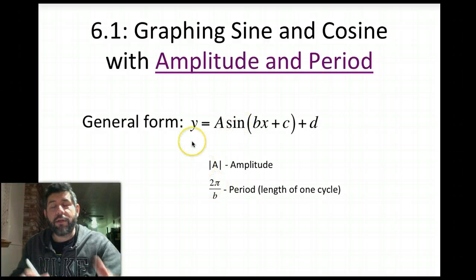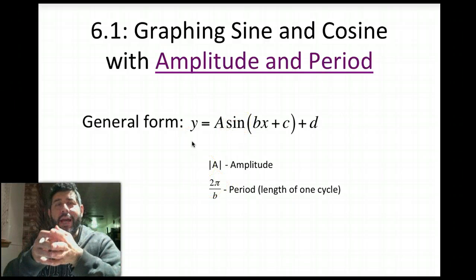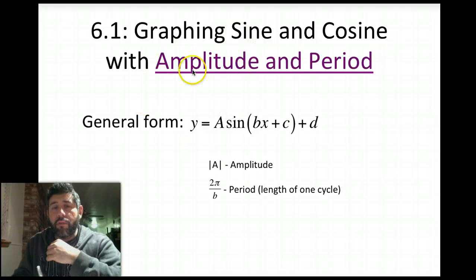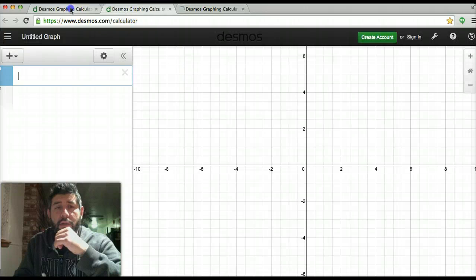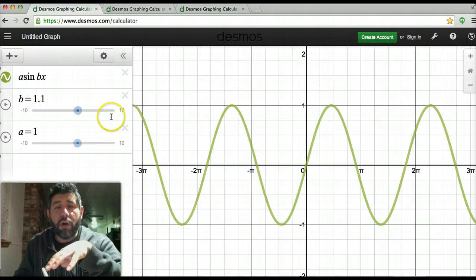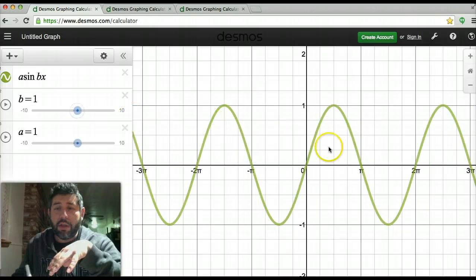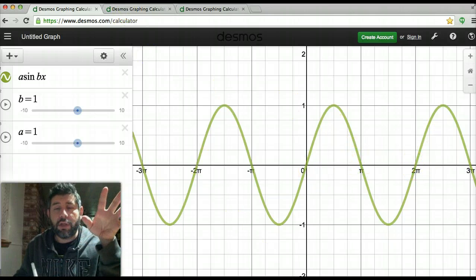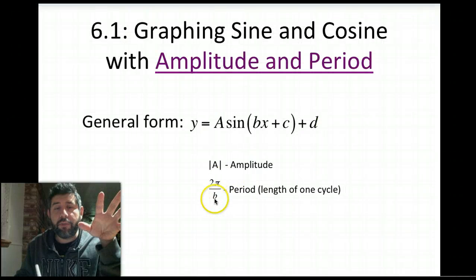And that comes from the fact that, if you remember, when I had b set to 1, we saw that when b was set to 1, the period, the length of time it takes to get to one cycle, is 2 pi, so 0 to 2 pi. So that shows us here when we have the formula 2 pi over b, b is 1, the period would be 2 pi. So that's the formula.